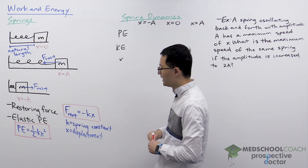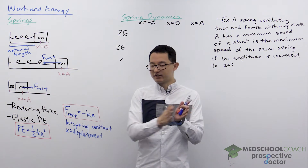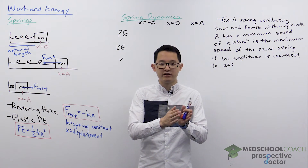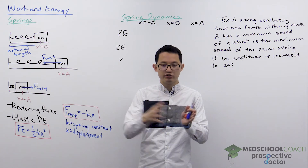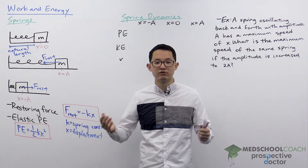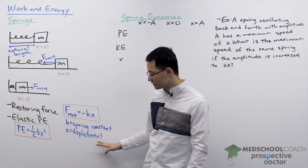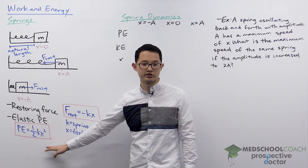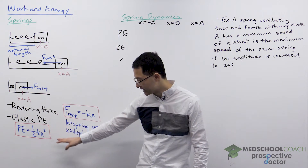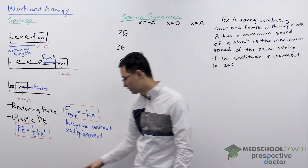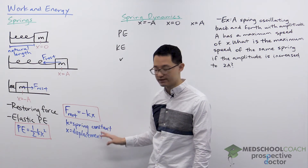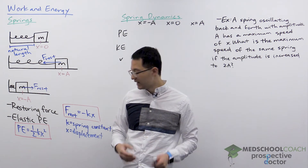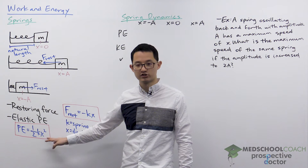Another important thing about springs is that you can compress one and hold it there, but the moment you let go it shoots back to its equilibrium length, showing that a spring is capable of storing potential energy. We call this elastic potential energy, and it equals one-half kx squared. Here k is the spring constant and x is the displacement, so the potential energy stored is directly proportional to displacement squared.